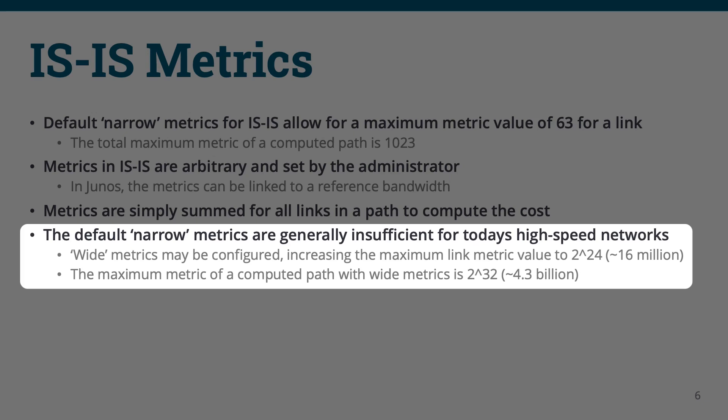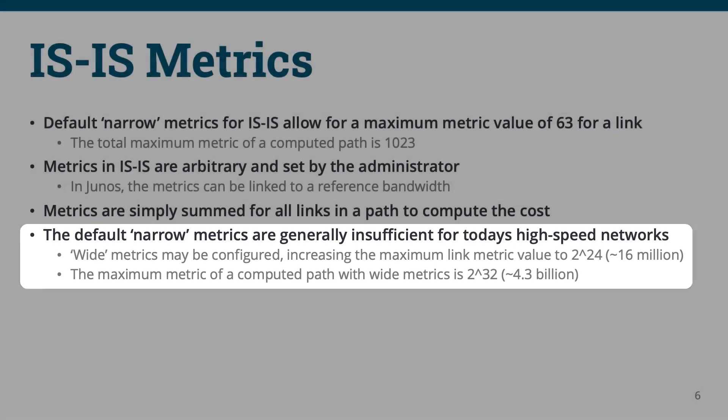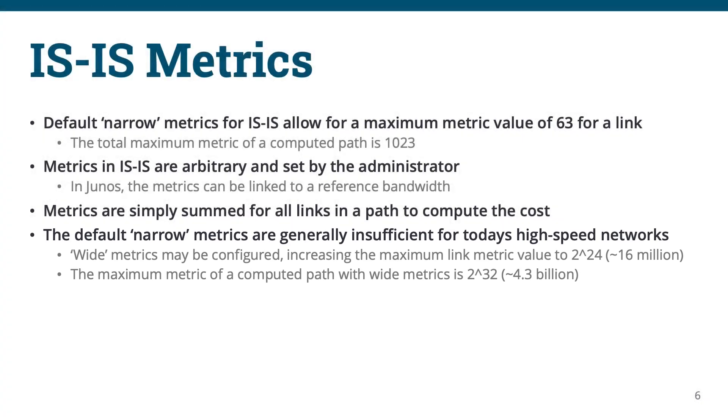Wide metrics are now standard and increase the maximum metric value of a particular link from 63 to about 16 million. The maximum metric of a total path is about 4.3 billion.